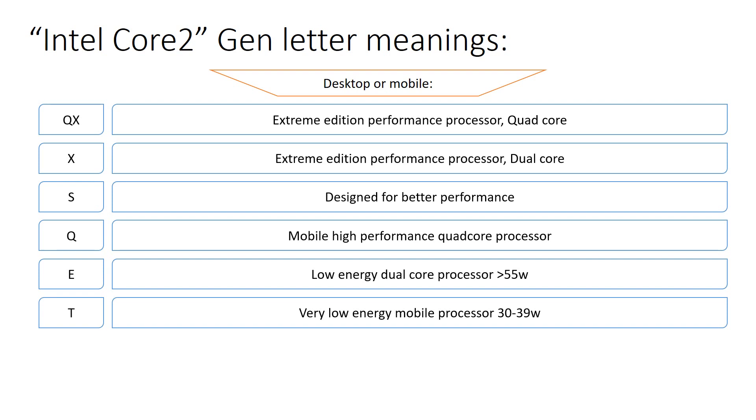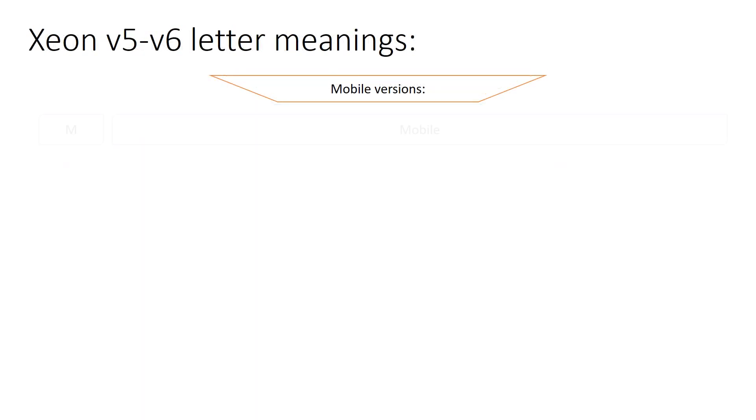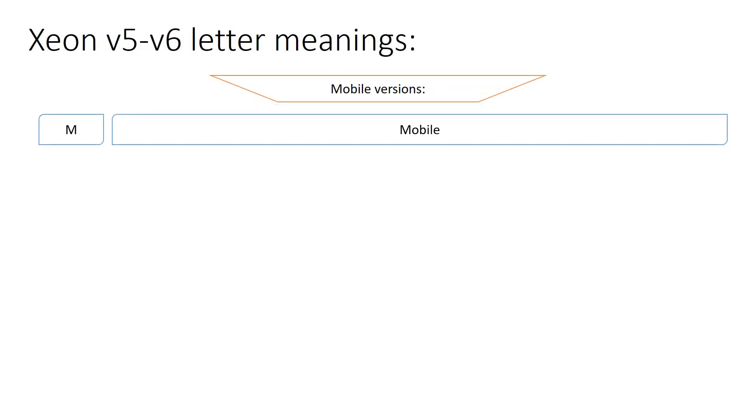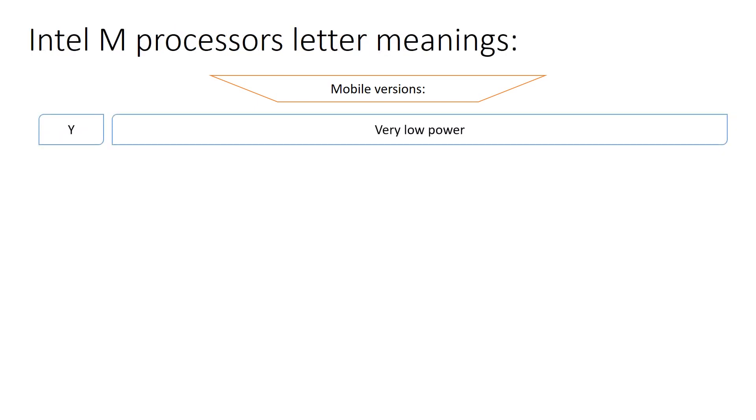T stands for very low energy mobile processor at 30 to 39 watts. For Xeon v5 to v6, M just stands for mobile, and Y means very low power. If you have any questions feel free to comment and I'll answer them. This video should be as accurate as I could make it, but if anything is inaccurate let me know in the comments and I can change it. Thanks for watching.